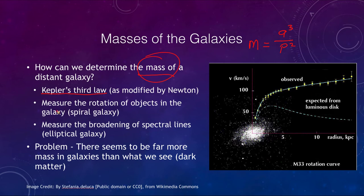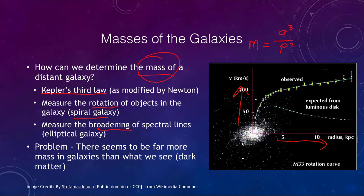Another way to determine mass is for spiral galaxies — we can look at the rotation of objects and the velocities as a function of distance, as shown in the graph here. That gives us information about the mass as well. We can also look at the broadening of spectral lines. Because elliptical galaxies don't have the same type of regular disk rotation that a spiral galaxy has, we can't look at their rotation, but we can look at the broadening of spectral lines to determine the mass of an elliptical galaxy.